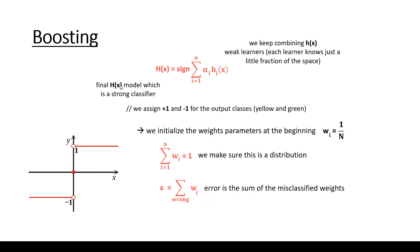The final capital H(x) model, which is a strong classifier, is equal to the sum of weak learners. We use some alpha parameters in order to control these h(x) weak learners. If alpha_i equals 0, it means we don't care about h_i(x). If alpha_i equals 1, it means that this h_i(x) weak learner is an important classifier.